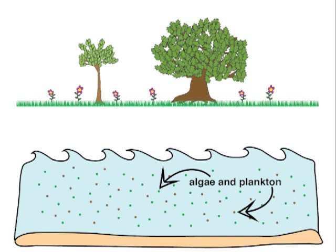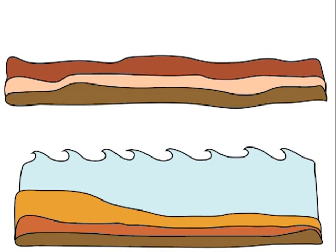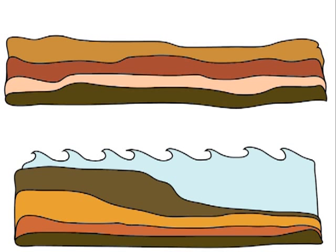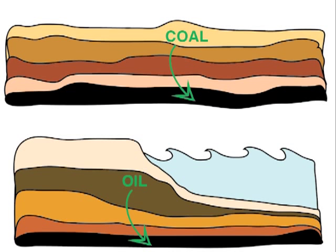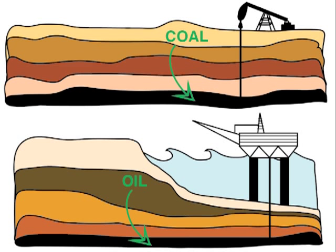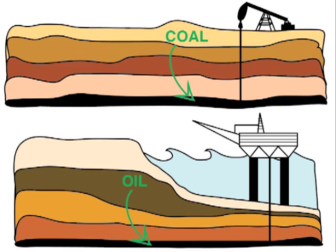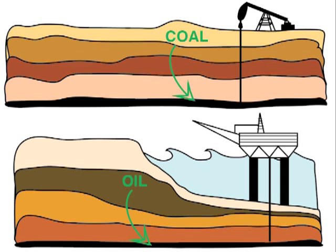If plants or other small organisms become buried for millions of years, they may become fossil fuels such as coal and oil. We burn coal, oil and natural gas for energy. Because coal and oil take millions of years to form, there is a limited supply of both.